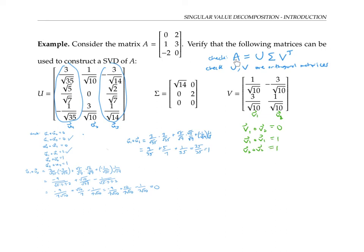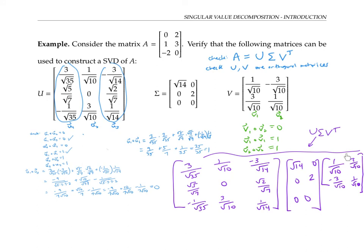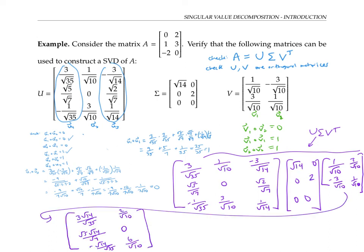Finally, we need to check that A is indeed the product of U times Σ times V transpose. Let me write out this product. Notice that the last matrix I wrote was V transpose, not V - I swapped those two entries, and that's exactly what I'm supposed to do. I'll multiply out these two matrices first. Recall, if I multiply a matrix by a diagonal matrix on the right, that amounts to just multiplying the columns by the appropriate diagonal entries.